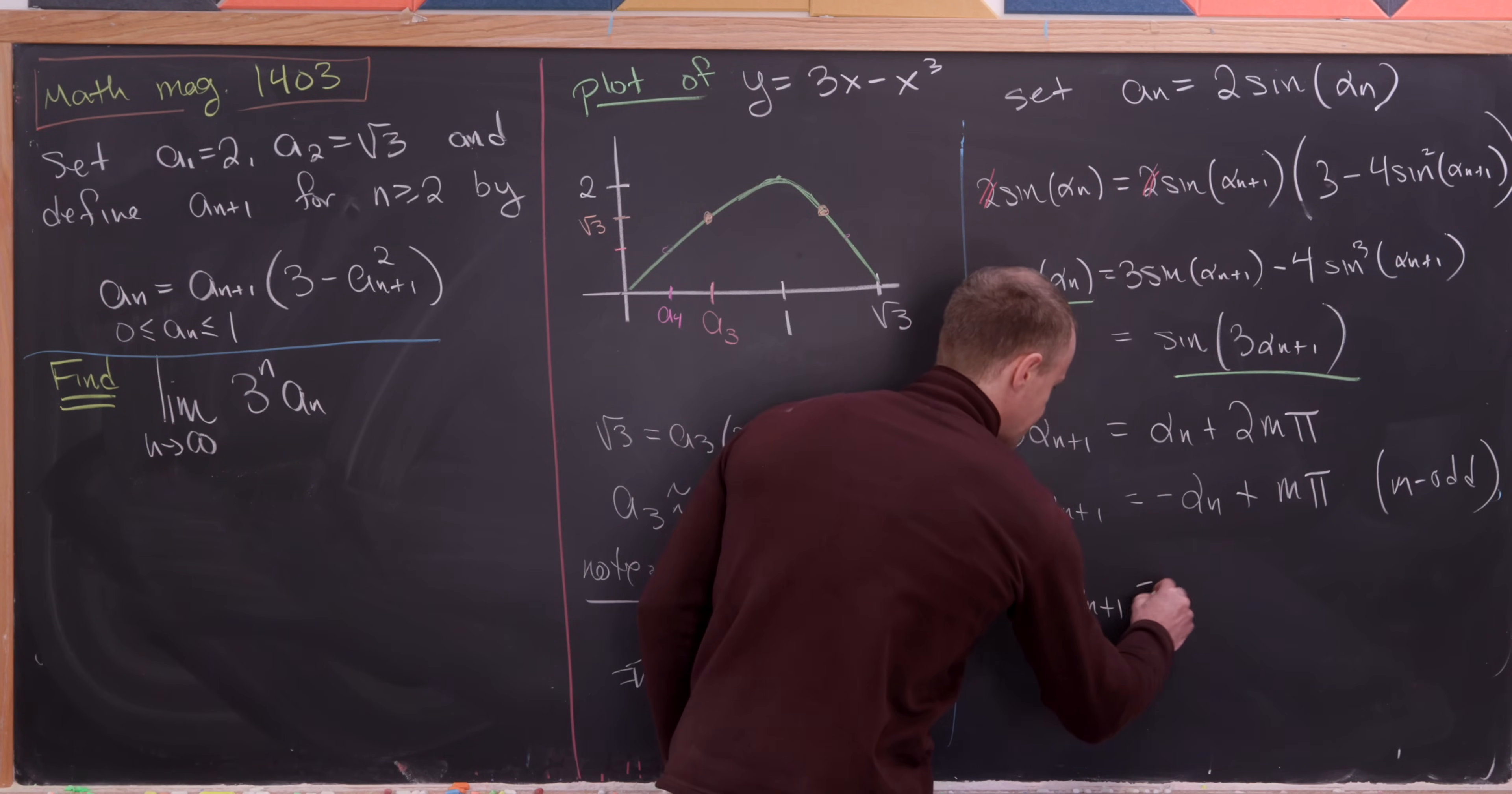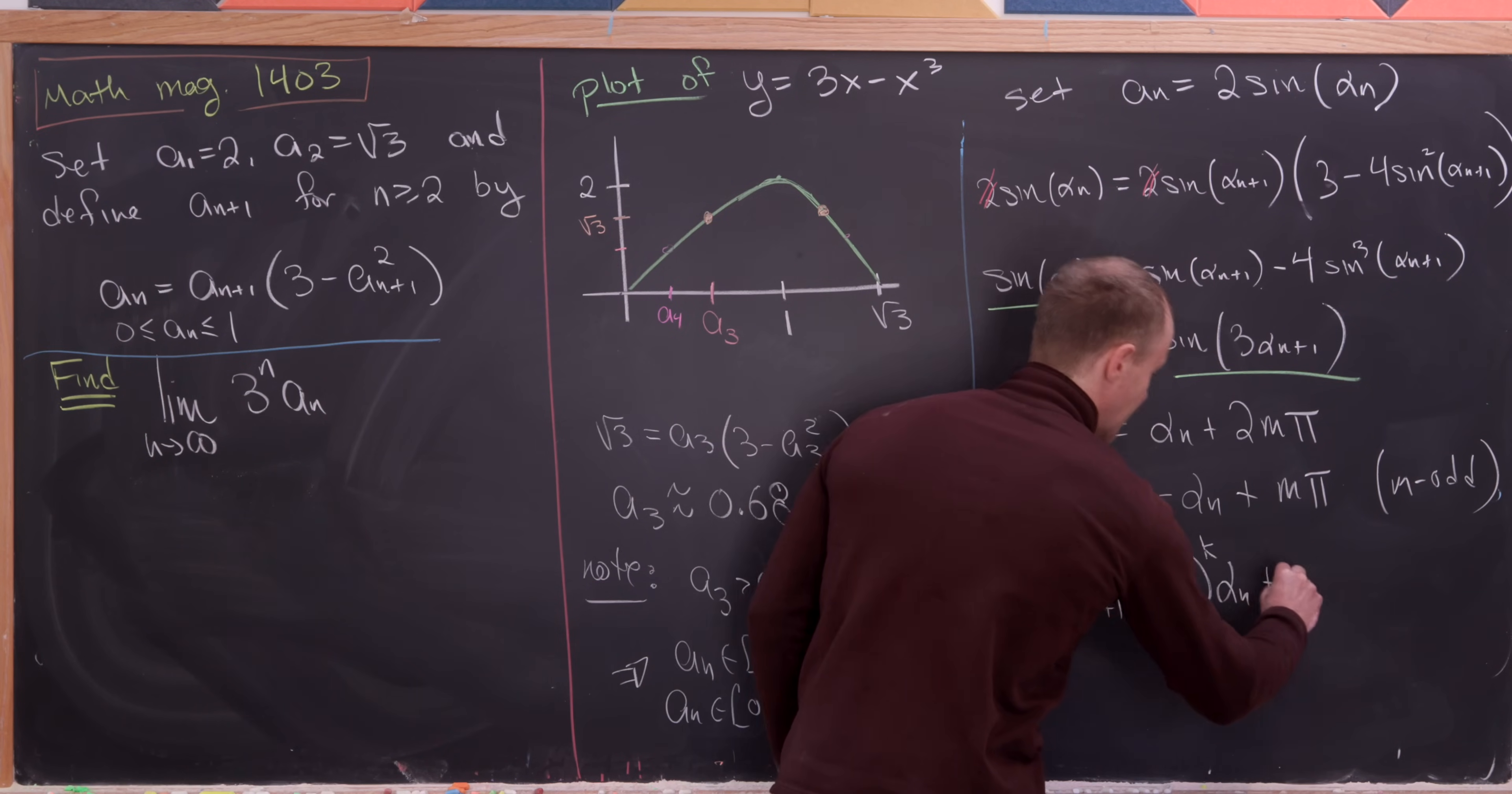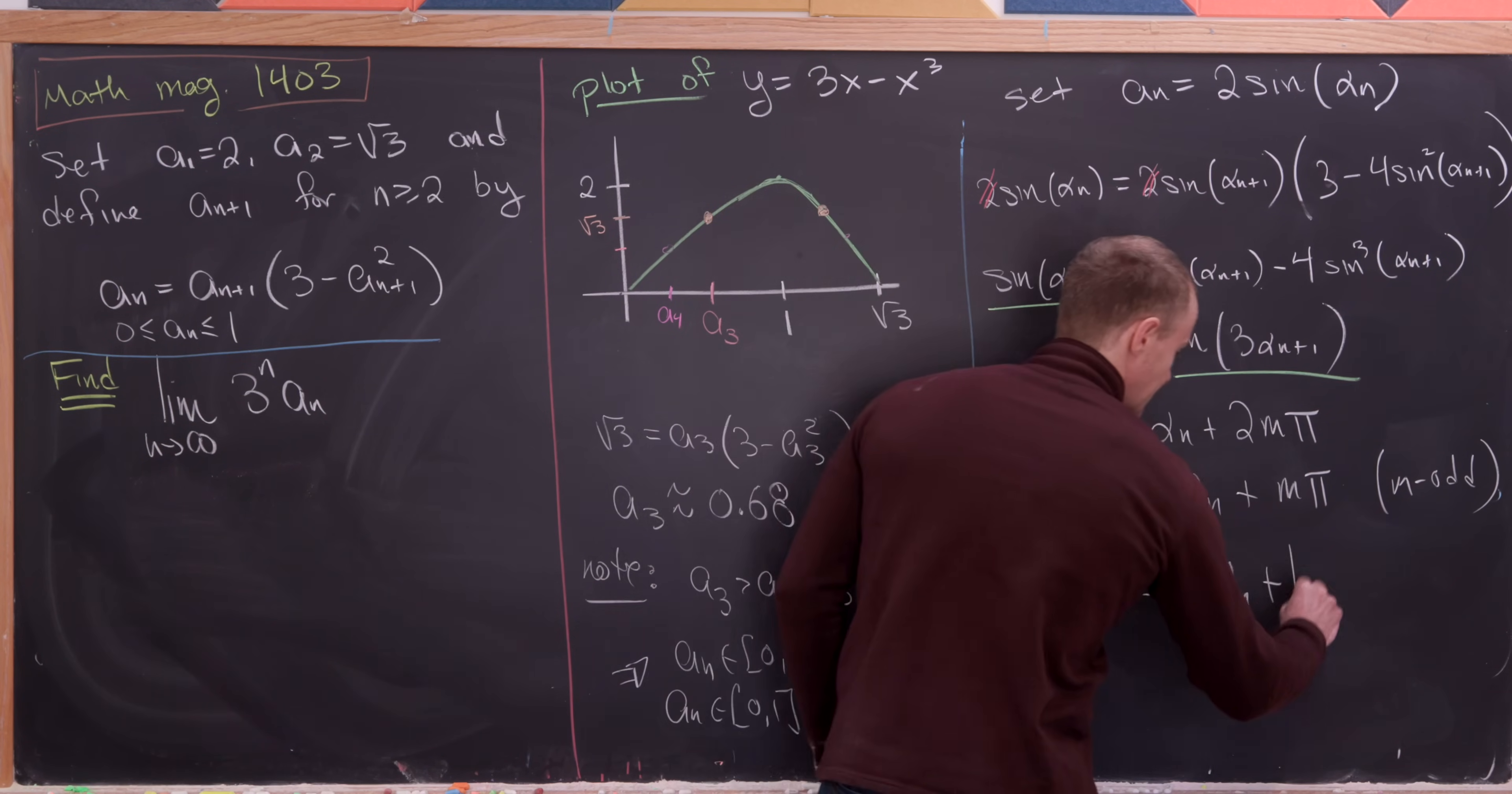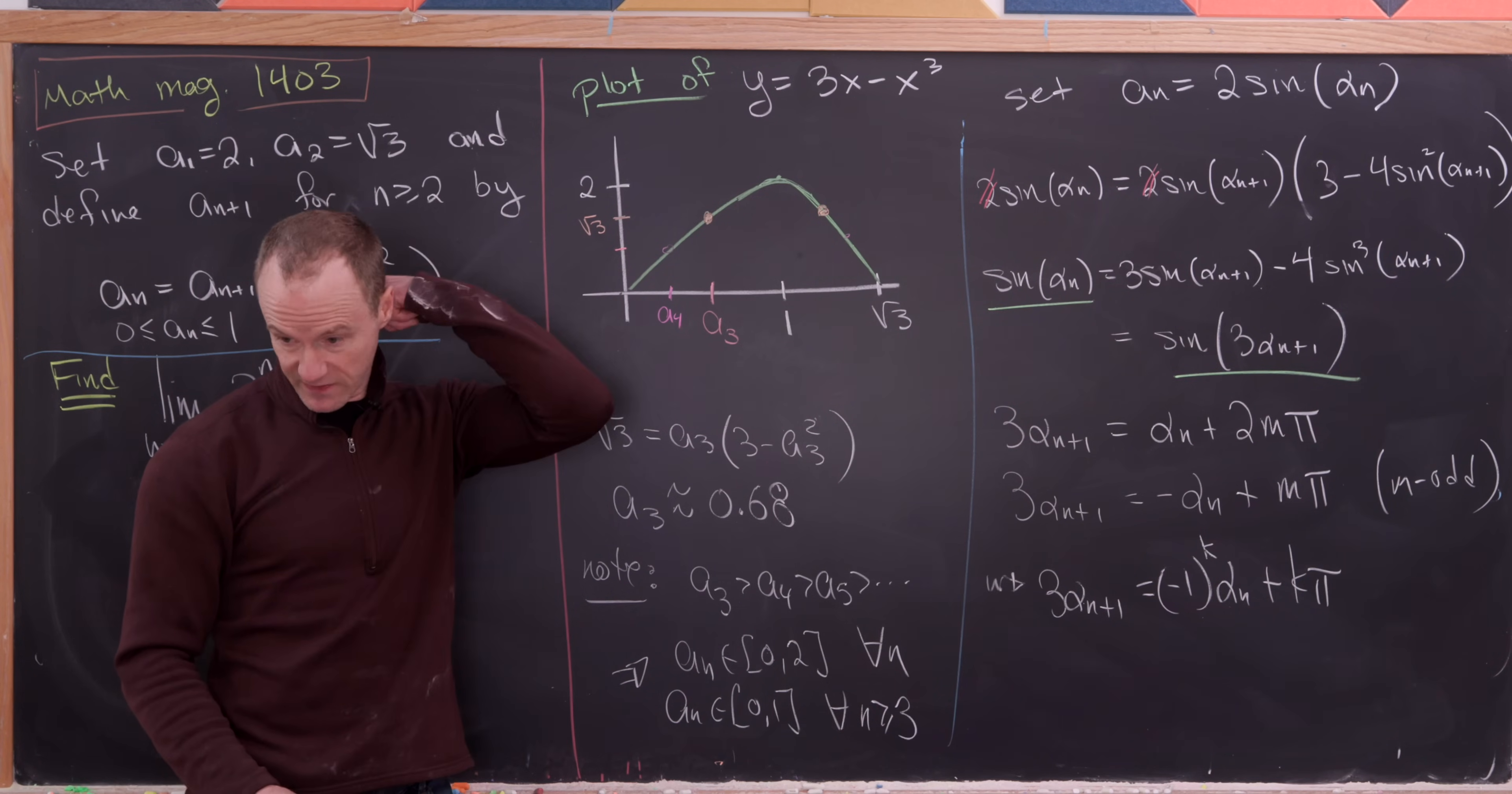So we have 3 alpha n plus 1 is equal to minus 1 to the k times alpha n plus k times pi. So we've got something going on like that.